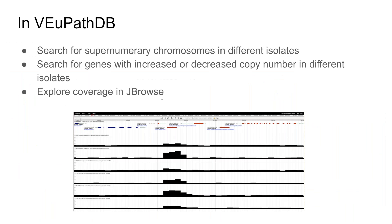We've written our own software to detect CNV regions by finding where coverage is higher or lower than the genome background. In our sites we have searches for supernumerary chromosomes in different isolates, searches for genes with increased or decreased copy number, and CNV tracks in JBrowse.